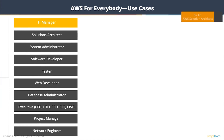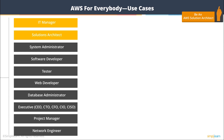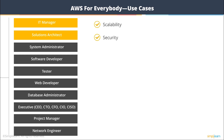If you're an IT manager and your priorities are to get work out the door quickly, ensure all account activities are recorded, and confirm that costs allocated to your department are consumed appropriately, then AWS is for you. If you're a solutions architect developing a solution for a large enterprise where scalability, security, auditability, traceability, and cost are the drivers, then AWS is the platform of choice.